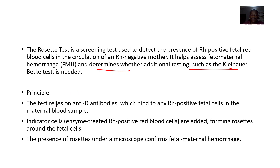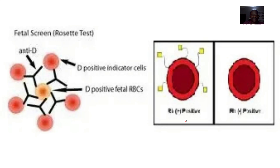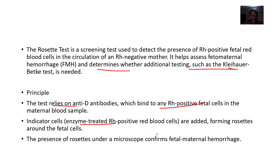The test relies on anti-D antibodies which bind to any Rhesus-positive fetal cells in the maternal sample. Indicator cells — enzyme-treated Rhesus-positive red blood cells — are added, and they form rosettes around the fetal cells. The presence of rosettes under a microscope confirms fetal-maternal hemorrhage.